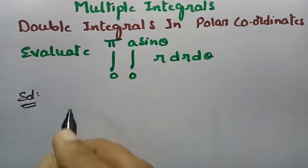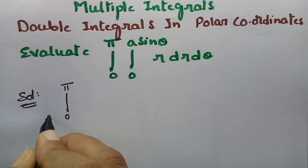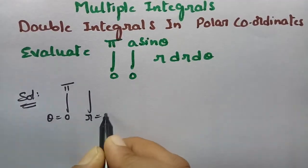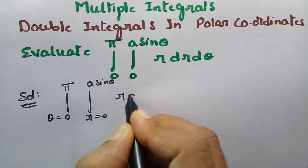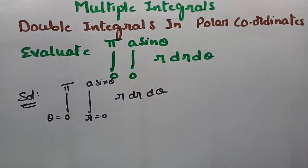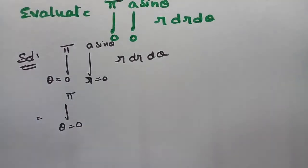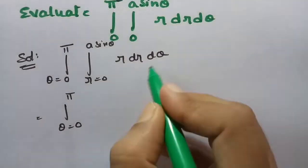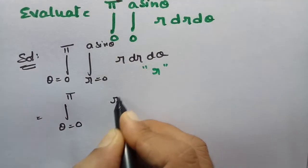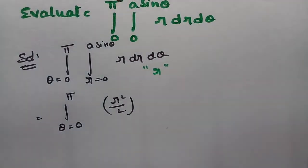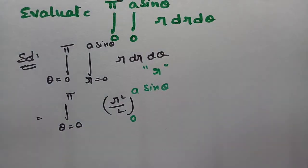Here is the solution. First of all we have to split the integrals. Theta is equal to 0 to pi and r is equal to 0 to a sin theta. This is r dr d theta and I will make integration with respect to r first of all. So here I am making integration with respect to r. For r this will be r squared by 2 between the limits 0 to a sin theta, into d theta.